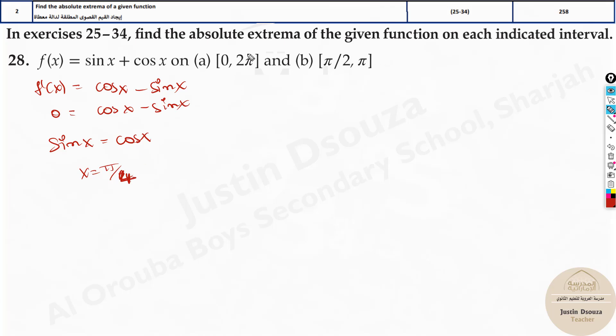That is the answer x equals pi by 4. Since they have given intervals in the limit, this will be included in the limit over here and it's not included over here. That's how we solve it. But how do you do it in the calculator? I'll show you now.